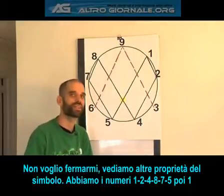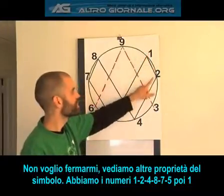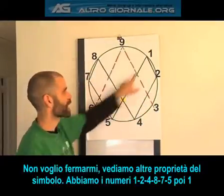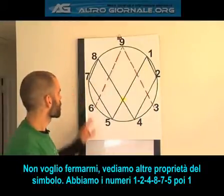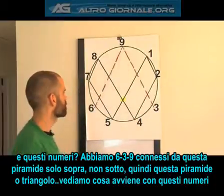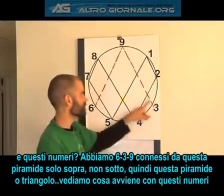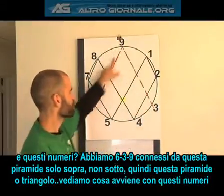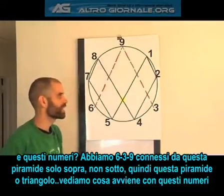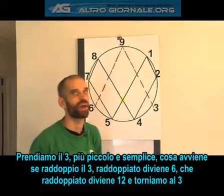I want to take a look at some of the other properties of my symbol. I've talked about six numbers: one, two, four, eight, seven, five — back to one. What about these numbers? I have six and three and nine, and they're connected by this pyramid. It's only connected at the top, never connected on the bottom. So this triangle or pyramid here connects the three, nine, and six. Let's find out what happens with these numbers when they start getting mathematical functions.